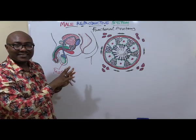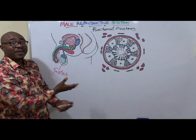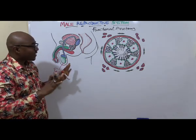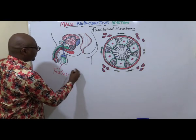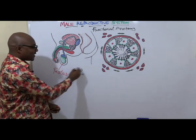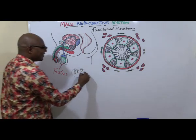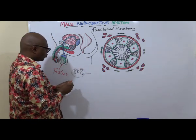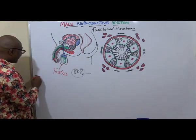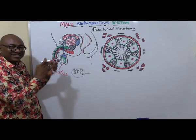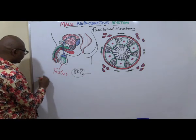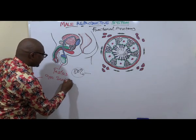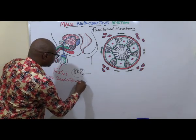The testis is made up of about 900 tubules. About 80 percent of the testis is made up of what is known as seminiferous tubules — about 900 convoluted, coiled seminiferous tubules.